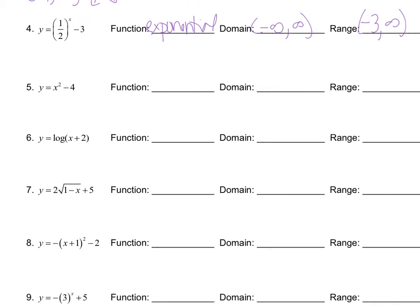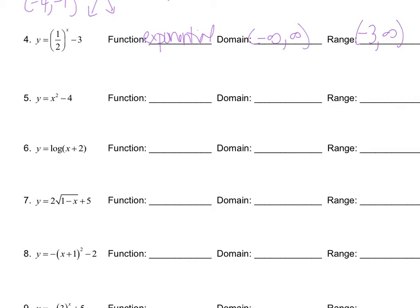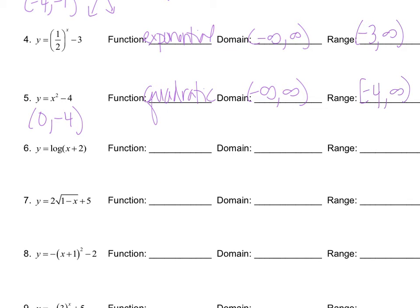In example five, this is a quadratic function. As stated earlier in the video, the domain is always going to be negative infinity to infinity, but the range will have some restrictions. You go to the vertex, which is at zero, negative four. The a value is one, so that's positive, meaning we start at negative four and we go to positive infinity.